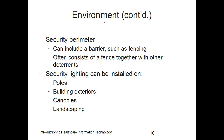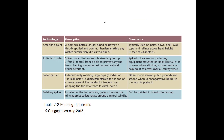The security perimeter can include a barrier such as fencing around a physical facility, often consisting of a fence together with other deterrents. Security lighting can be installed on poles, building exteriors, canopies, or landscaping. On this table we have examples of fencing deterrents: anti-climbing paint, anti-climb collar, roller barrier, or rotating spikes — all additional deterrents to help limit unauthorized access.